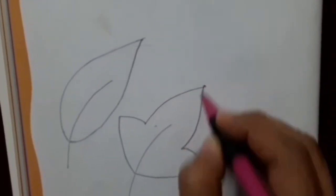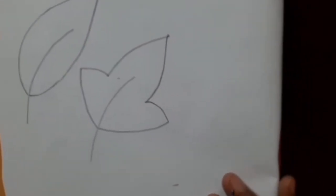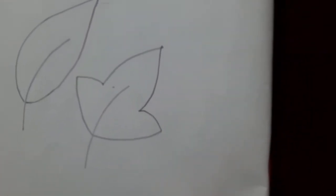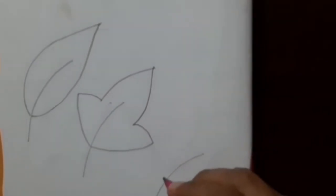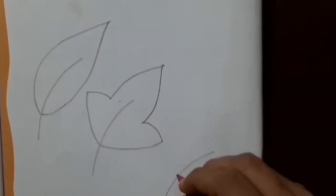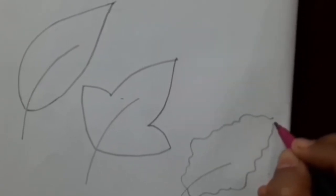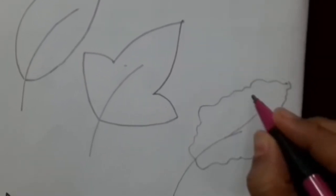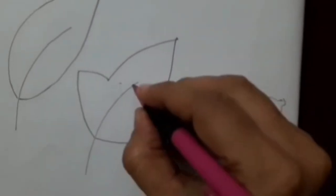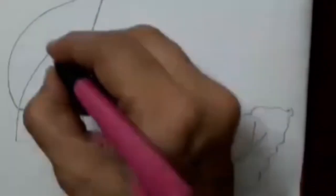That curve will match here in the center. Now we will draw one more leaf. Here I am going to make small uneven curves like this, and again I will make curves here. Now inside I am going to draw small slanting lines like this.